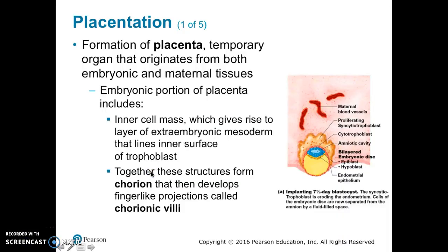Welcome back. This is chapter 28a part 4: placentation. Placentation is the formation of the placenta, a temporary organ that originates from both the embryonic and maternal tissues. The embryonic portion of the placenta includes the inner cell mass, which gives rise to the layer of extra-embryonic mesoderm that lines the inner surface of the trophoblast.